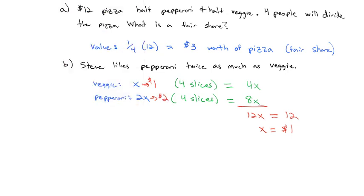And we know that a fair share of this pizza has a value of $3. So Steve wants to get $3 worth of pizza. He could get one slice of veggie, which he would value as $1, and one slice of pepperoni, which he would value at $2, which gives us a total of $3 in pizza. Steve might instead decide he wants more pizza, so even though he values the veggie less, he could take three slices of veggie pizza. At $1 each, he'll put those three veggie slices at a total value of $3, which is his fair share.